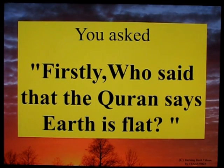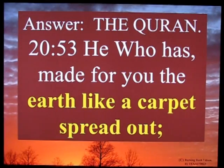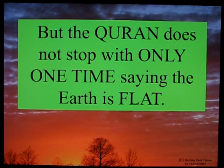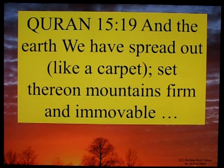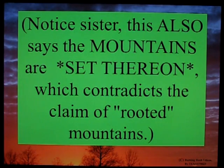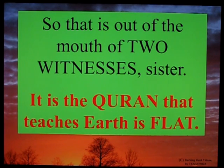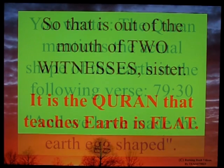You asked firstly: who said that the Quran says the earth is flat? Answer: the Quran. Surah 20:53 — 'He who has made for you the earth like a carpet spread out.' Is a carpet round in three dimensions or flat? The correct answer is flat. But the Quran does not stop with only one time saying the earth is flat. Quran 15:19 — 'And the earth we have spread out like a carpet, set thereon mountains firm and immovable.' Notice, sister, this also says the mountains are 'set thereon,' which contradicts the claim of rooted mountains. So that is out of the mouth of two witnesses, sister. It is the Quran that teaches the earth is flat.